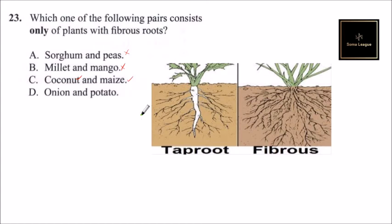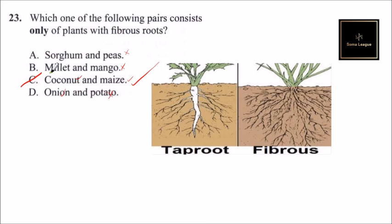Looking at option C: coconut has a fibrous root system and maize has a fibrous root system, so that combination is correct. For option D: onion is fibrous but potato is not. So the correct answer is C — the pair that consists only of plants with a fibrous root system.